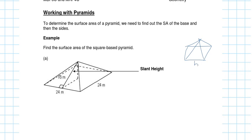They call this side B, so the area of the base is B squared. The area of each triangle is base times height divided by 2. And importantly, I'm looking at the actual height of the triangle — not the height of the pyramid. These are two different heights.